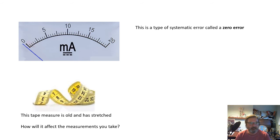Another example is imagine that this tape measure is old and it has stretched a bit. And because it's stretched a bit, if we use it to measure the length of things, then the answer that we get will be too small, because the tape measure has stretched. So that's another example of a systematic error.